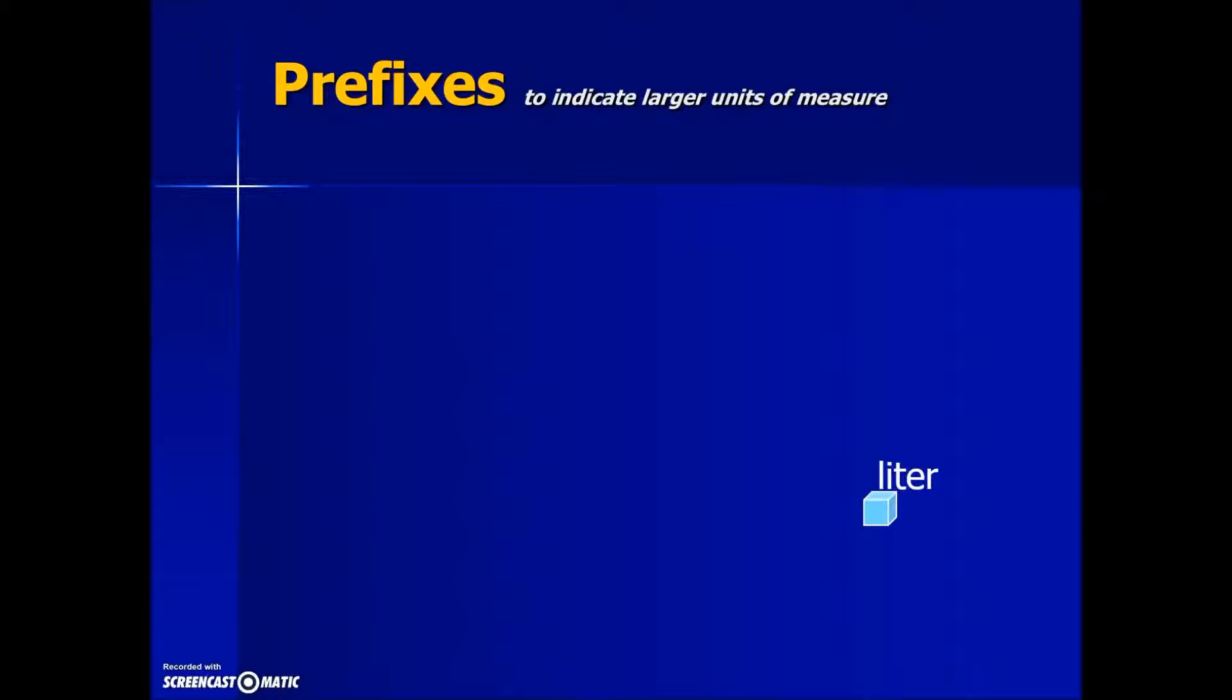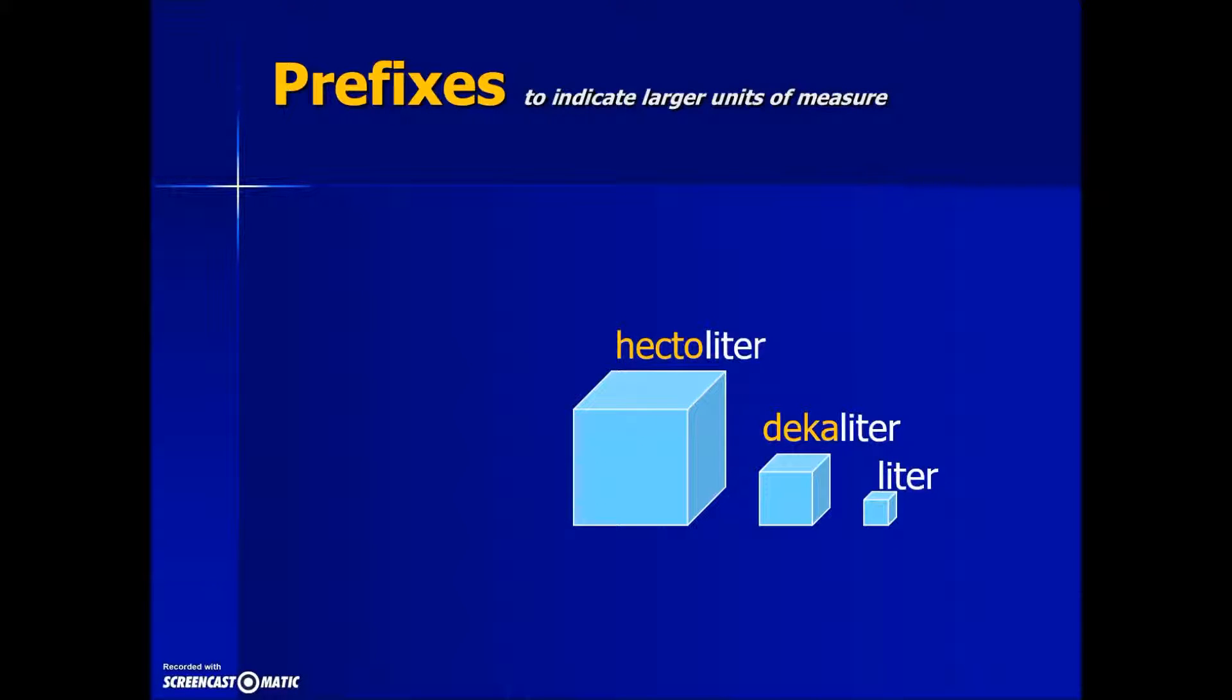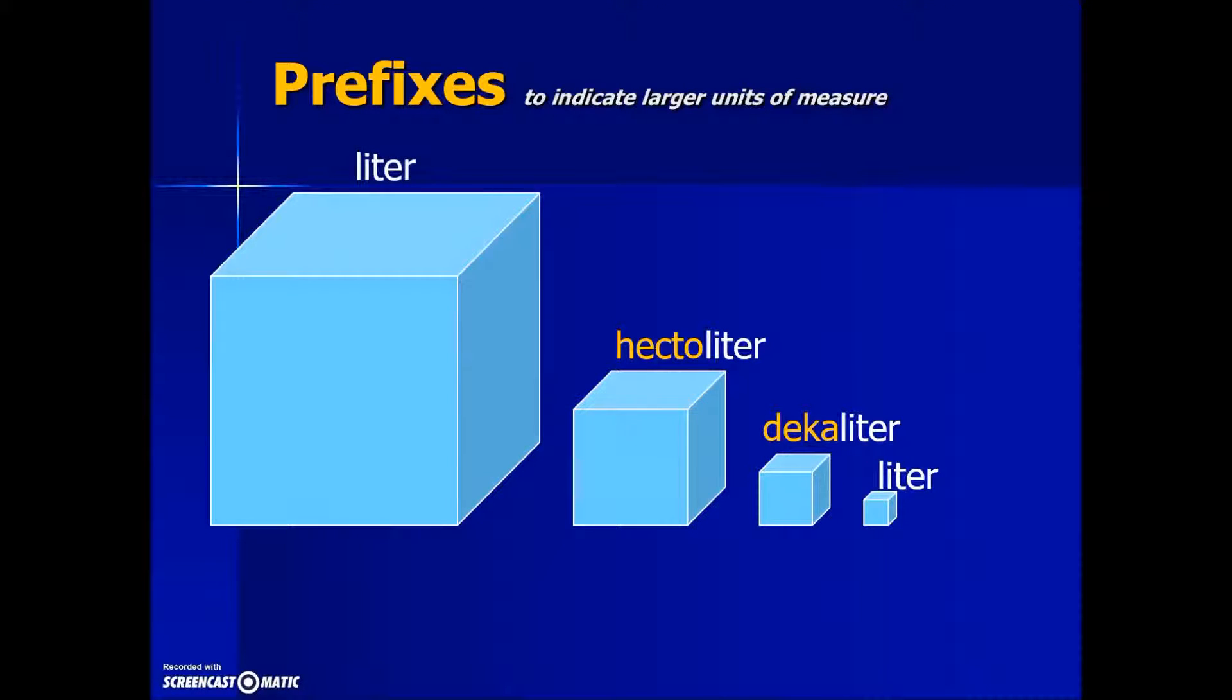Here we have the liter again. If we multiply it by 10, 10 times the liter is going to be represented as a decaliter. If we take that decaliter and multiply it by 10, we will call it a hectoliter. Anytime we see hectoliter, it means it is 10 times 10 the liter. Another multiple of 10 is going to be represented with the prefix kilo. We now have 10 times 10 times 10 or 1000.